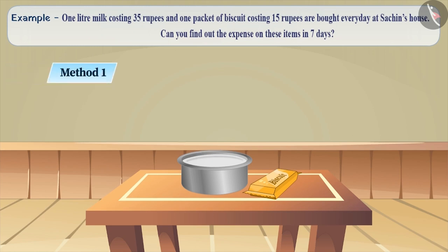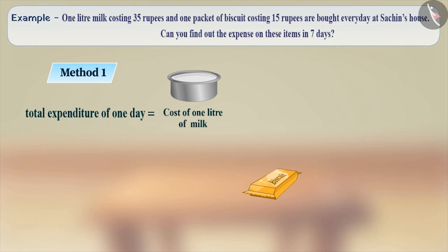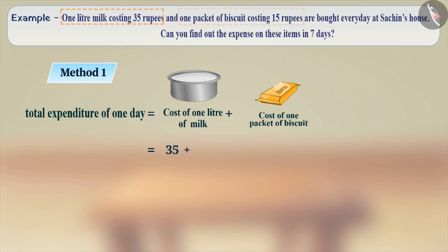Method 1: To solve this, we will find the total expenditure of one day, that is, the cost of one litre of milk plus the cost of one packet of biscuits, 35 plus 15. Now how do we find the expenditure for 7 days? Think for a while.